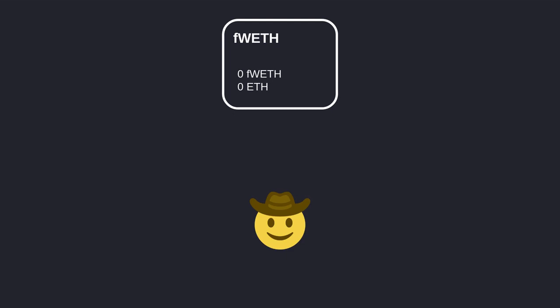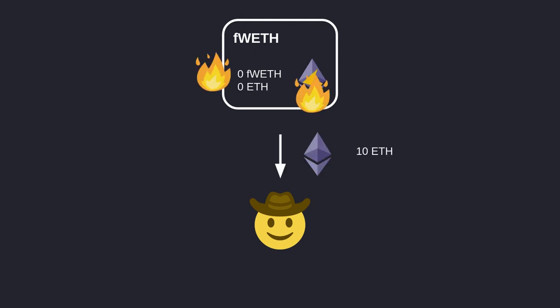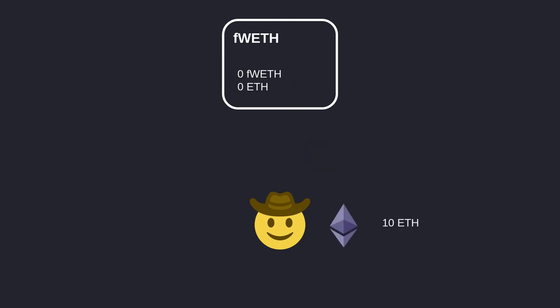First, I'm going to explain how a flash mintable token works. For this example we'll use a flash mint enabled WETH, which I named fWETH. There are two ways to mint fWETH. The first way is you send ETH and you get the same exact amount of fWETH. You can hold on to this fWETH, and when you want to withdraw your ETH you return the fWETH — that fWETH gets destroyed and you get your ETH back. The second way of minting fWETH is by flash mint. Unlike the first way, here the fWETH will be minted out of thin air without any deposit of ETH.